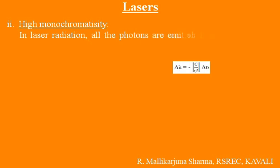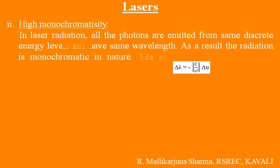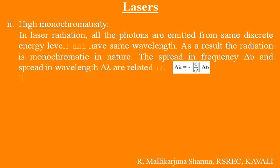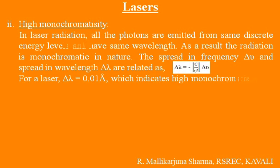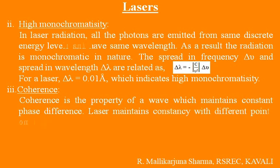Second point: High monochromaticity. In laser radiation, all the photons are emitted from the same discrete energy levels and have the same wavelength. As a result, the radiation is monochromatic in nature. The spread in frequency Δν and spread in wavelength Δλ are related as: Δλ = −|c / ν²| × Δν. For a laser, Δλ is equal to 0.01 angstrom, which indicates high monochromaticity.